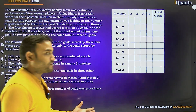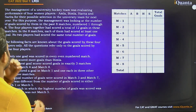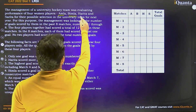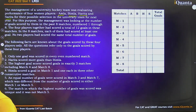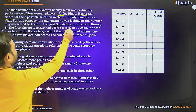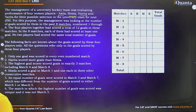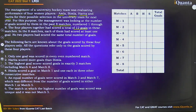This question is based on the concept of tournaments. The management of a university hockey team was evaluating the performance of four women players — Amla, Bimla, Harita, and Sarita — for their possible selection in the university team for next year. The management was looking at the number of goals scored by them in the past 8 matches, numbered 1 through 8. The four players together scored a total of 12 goals, and in these 8 matches, each of them had scored at least one goal.